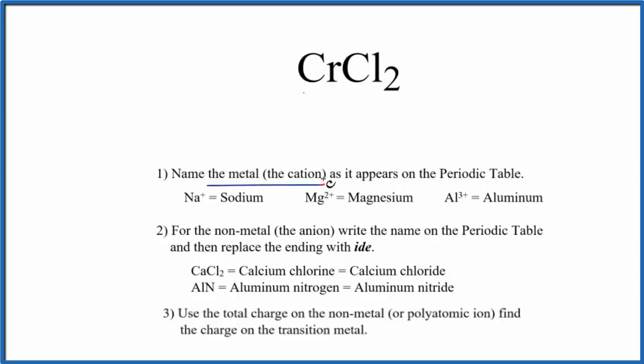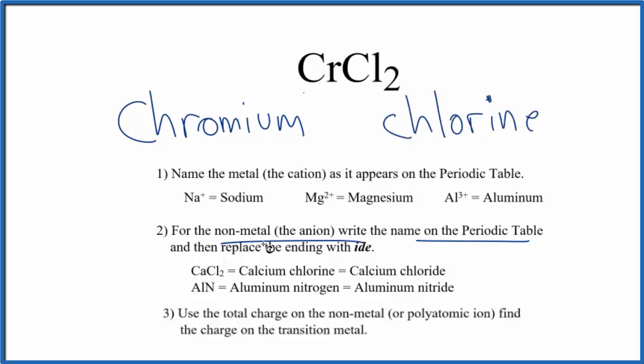So we'll write the name of the metal as it appears on the periodic table. Cr, that's chromium. And then we write the name for the nonmetal as it appears on the periodic table, Cl. We'll use a lowercase c, and then we're going to replace the ending with -ide. So we get rid of this and write -ide.